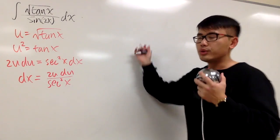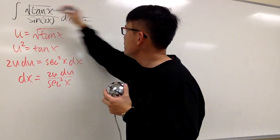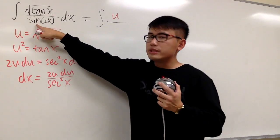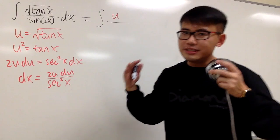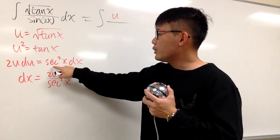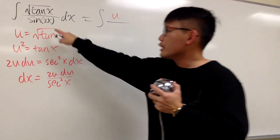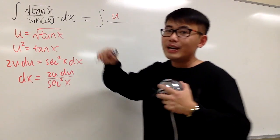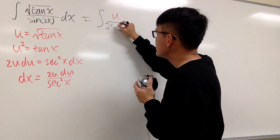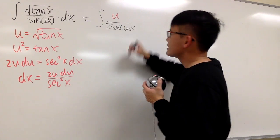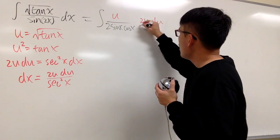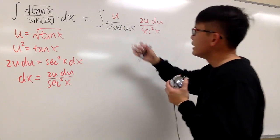Now we can take this integral into the u world. On the top we have just u, and in the denominator we have sine of 2x. Let me use the double angle formula for the sine — we don't want to keep sine of 2x, so let's break it apart as 2 sine x cosine x. And for the dx part, we have 2u du over secant squared x.